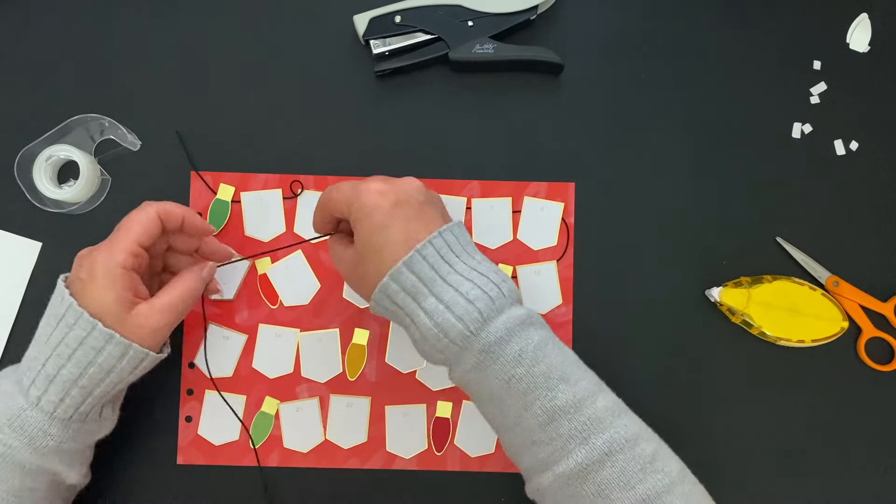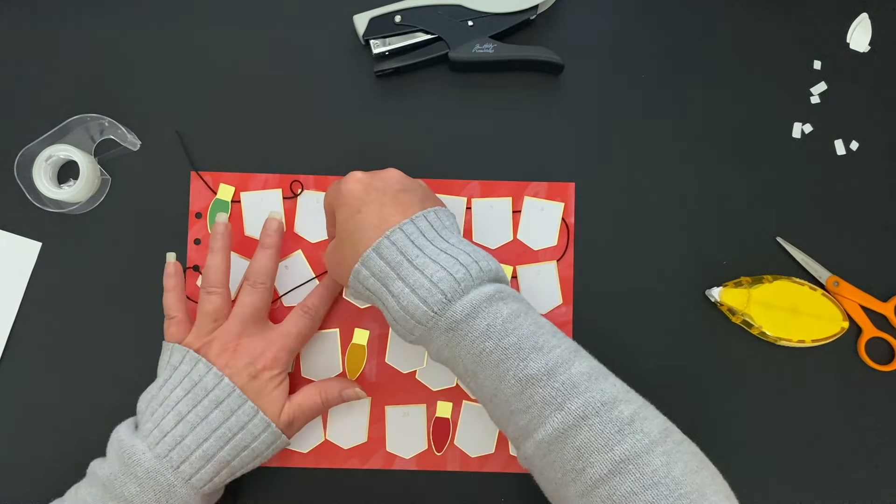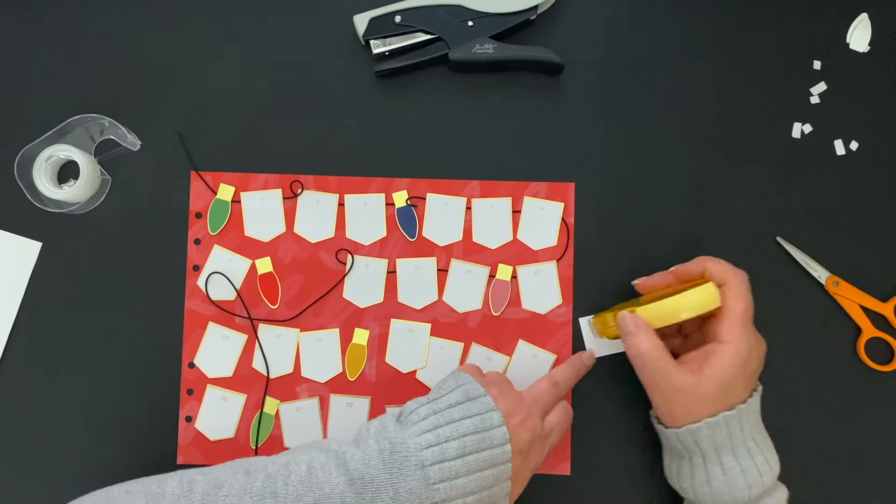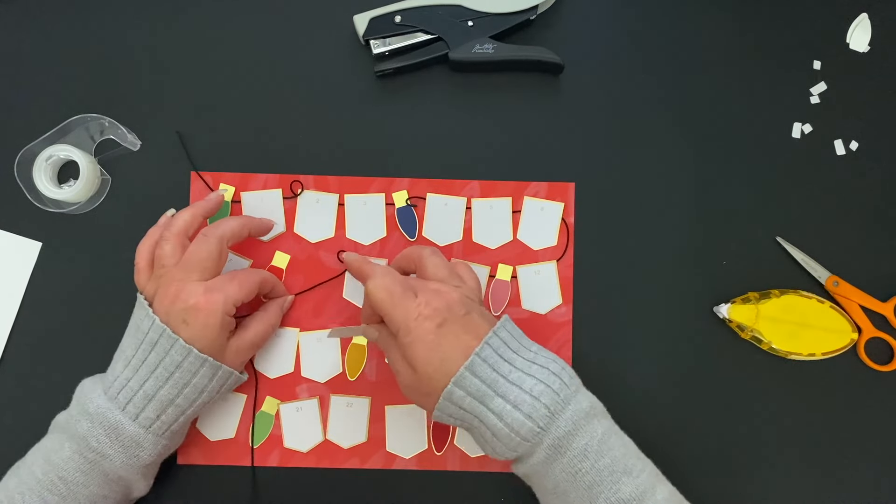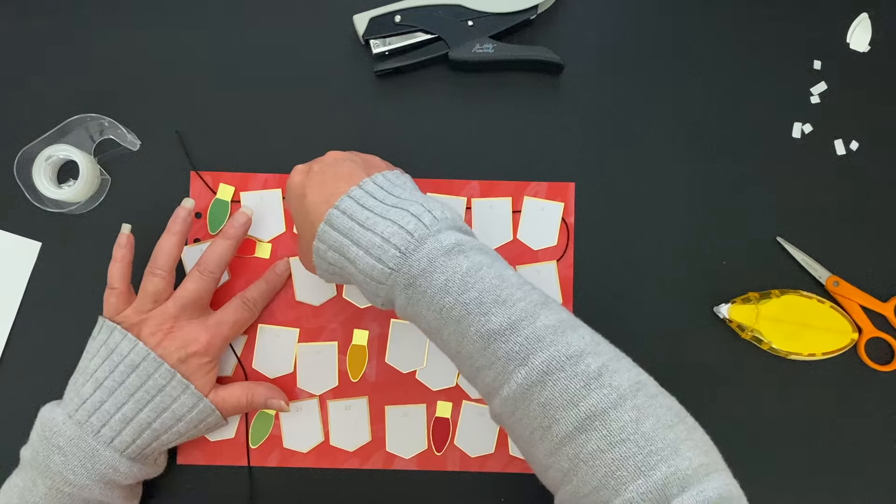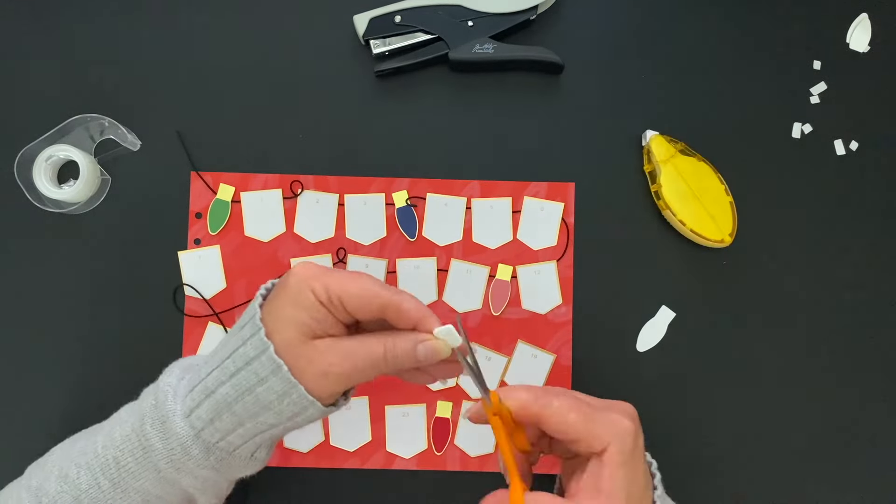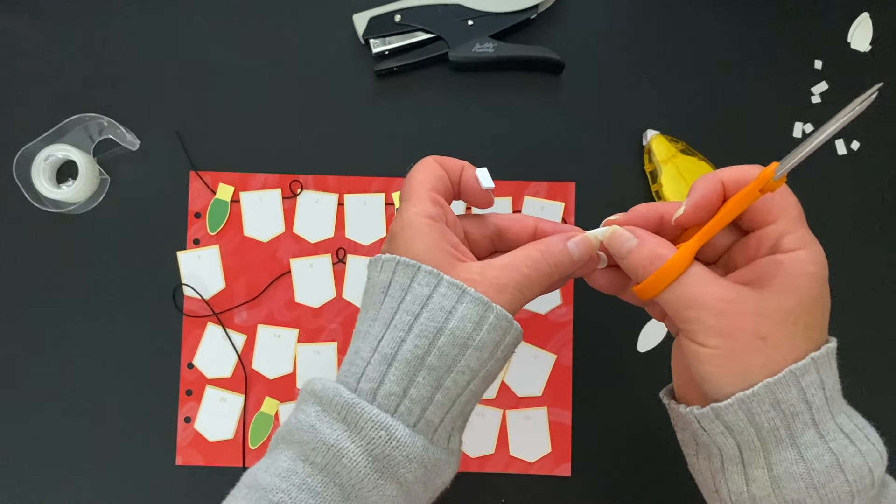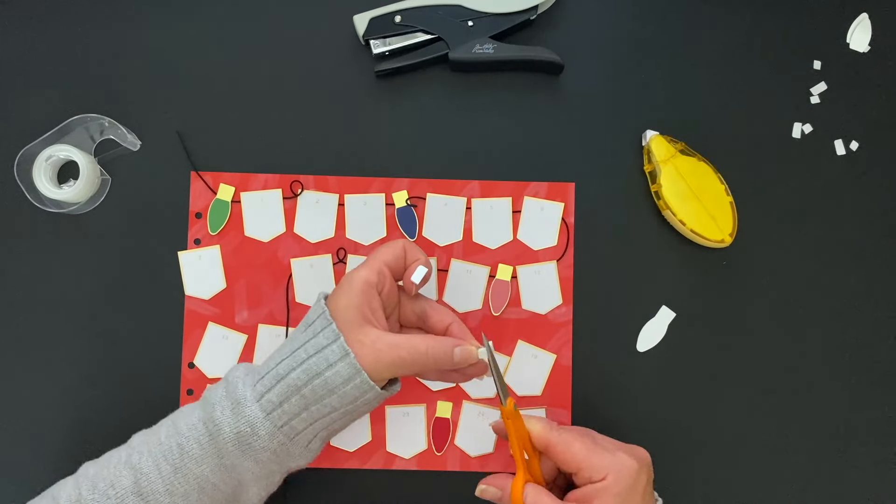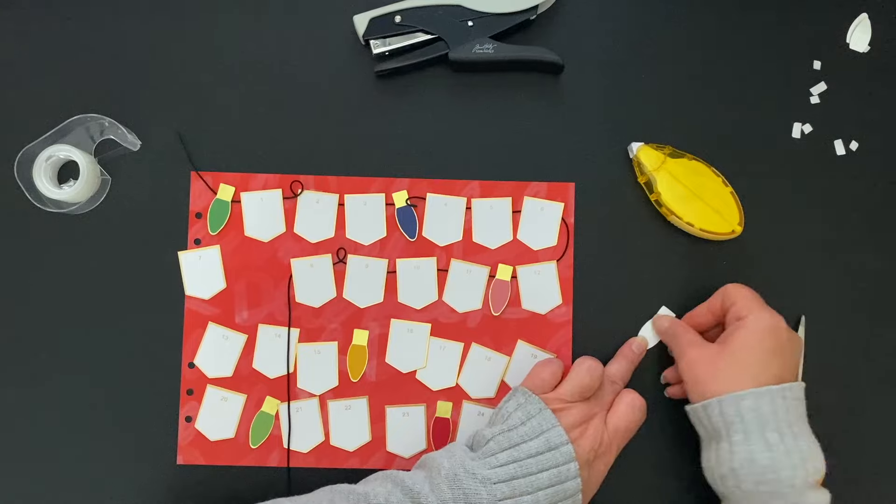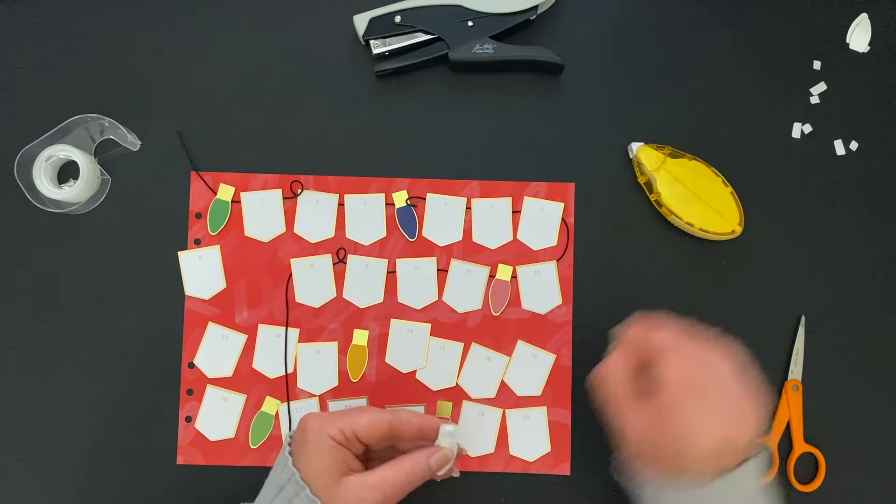The bulbs are using the current foam adhesive that I work with, which is the Scrapbook Adhesive 3D Foam Squares. That's what I currently use, so the bulbs are a little bit higher than the banners.